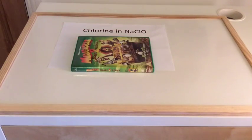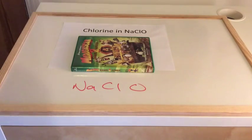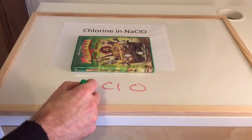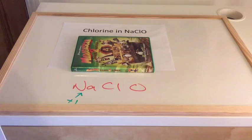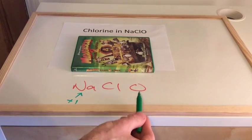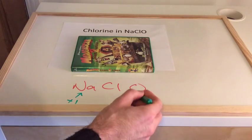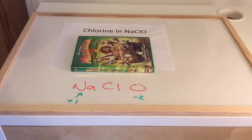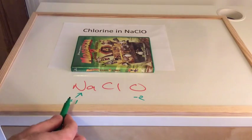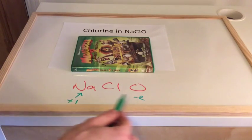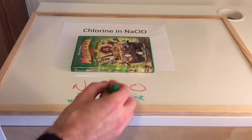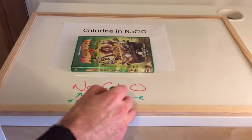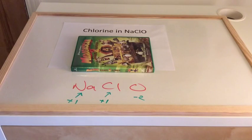What about this one with chlorine? What's the oxidation number of chlorine in NaClO? Apply the rules. We've got sodium, which is group 1, so that's plus 1. We've got oxygen, minus 2 in this case because there's no fluorine in there. So what have we got left? We've got plus 1 with minus 2, so we need a plus 1 from the chlorine to keep this neutral.